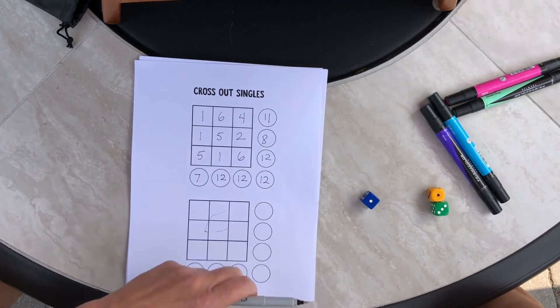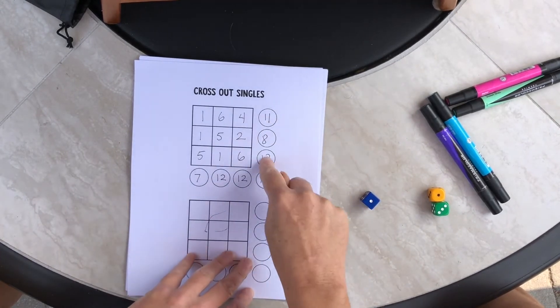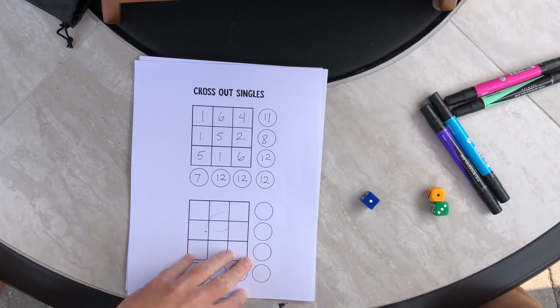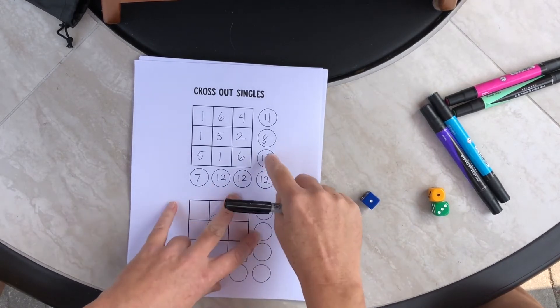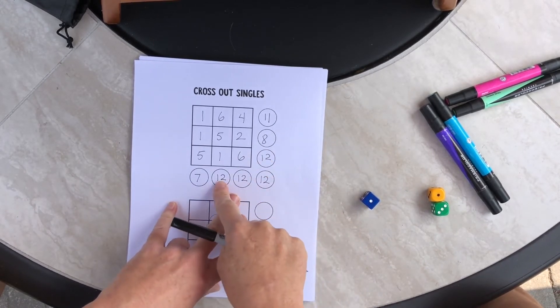Okay, and now is the fun part. We look in the circles and you see if any of the numbers are written more than once. I can see that I have one, two, three, four twelves on here.